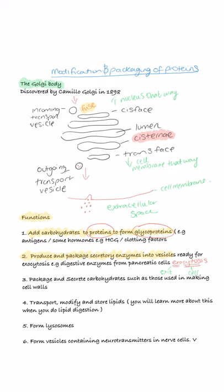Number three, it can package and secrete carbohydrates such as those used in making plant cell walls like cellulose and like pectin.